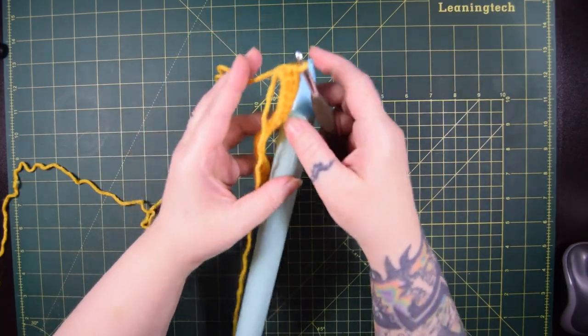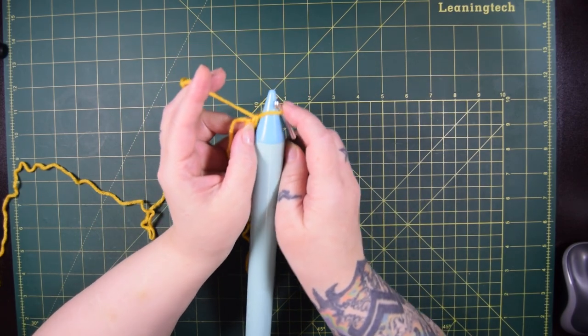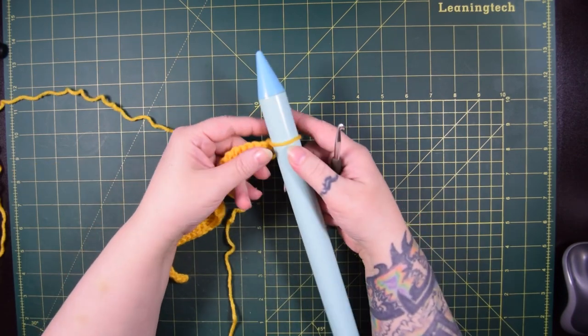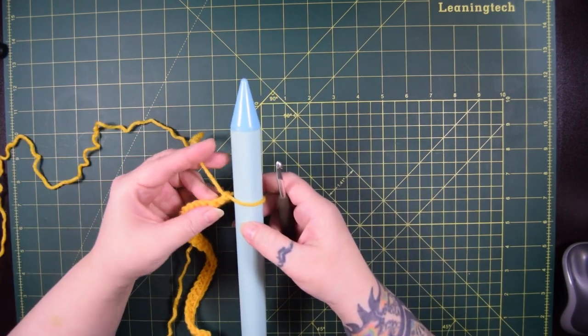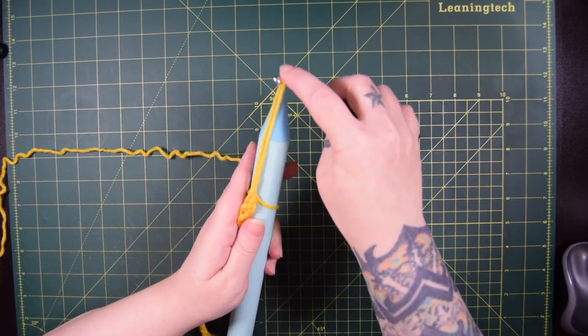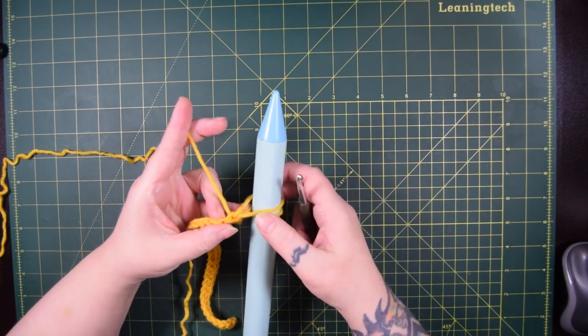So to begin the first row with the needle, or the broom handle, we're going to use the hook to move the working loop onto the needle. Then turn the work. Next insert the hook into the second stitch. We always skip the first stitch because the working loop on the hook counts as the first stitch. We'll pull up a loop from the second stitch and move it to the needle.